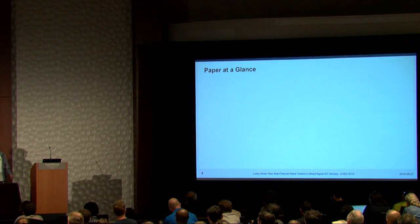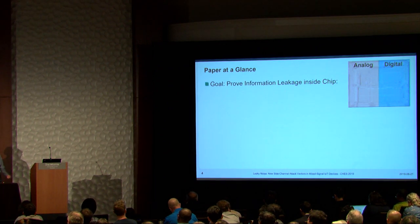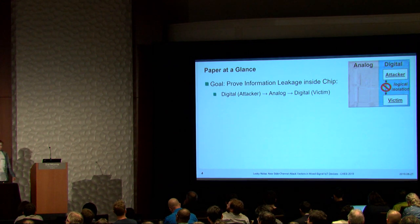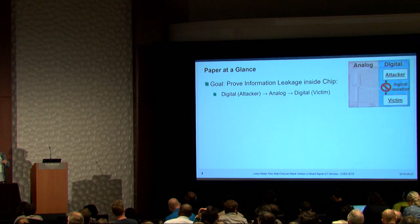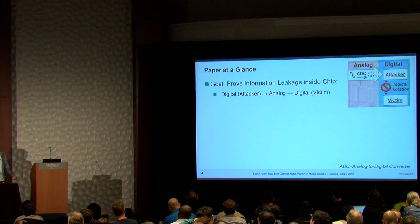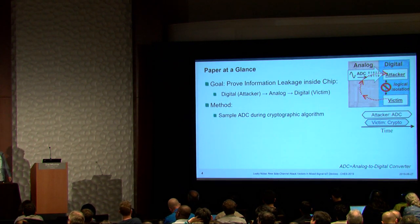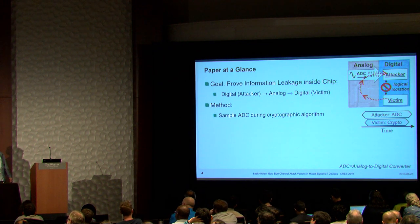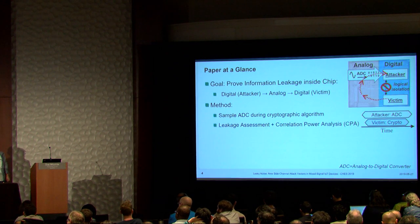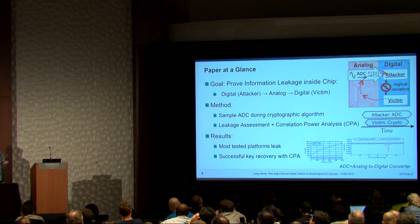If we consider two components in this chip that are isolated on the logical level, they may introduce new security threats. In more detail, we want to prove that there is information leakage inside the chip from the digital to the analog part and potentially also back to the digital part. The attacker can gain information from the victim through the analog part — for example, using an ADC, an analog-to-digital converter, to gain information that leaks from the victim into the analog side. The method we used is to sample an ADC during the operation of a cryptographic algorithm, then perform leakage assessment and correlation power analysis. In fact, in one case we could recover the secret key, and for leakage assessment we proved that most tested platforms are leaky.